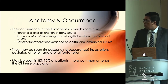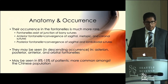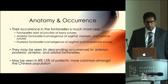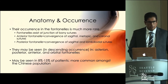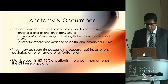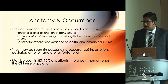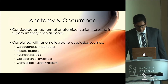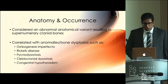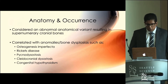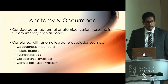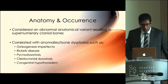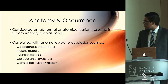Wormian bones are significantly common in the population — some studies suggest they may be present in up to 15% of people, but they're not really followed clinically because they don't cause much pathology. For some reason, they seem to be more common amongst the Chinese population compared to the general population. Their greatest clinical significance arises from their correlation with other bony dysplasias, including osteogenesis imperfecta, Rickets disease, and various cranial dysostoses.